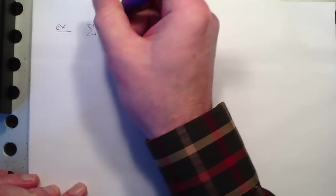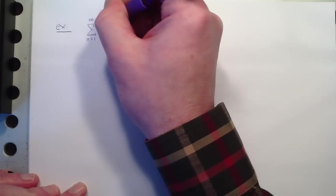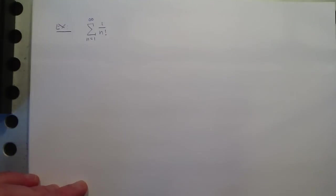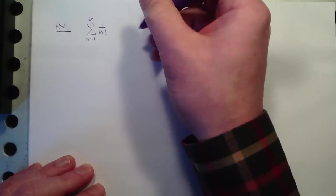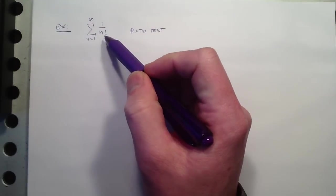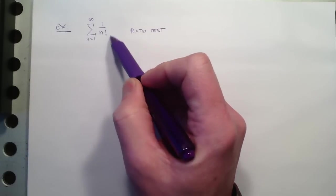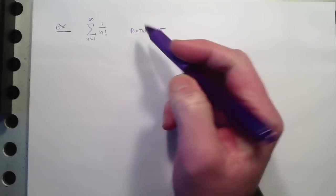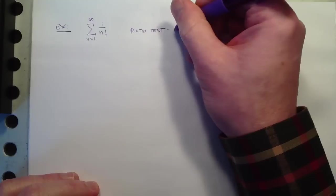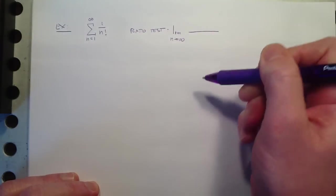Because if the limit of a term divided by the term before it, if that ratio is actually approaching a number, like a multiplier, and that number is less than 1, that means it's starting to behave more and more like a geometric series. And that means it will converge. Okay? So what does that look like? Let's do some examples. Let's try this. Does this converge? So we will use the ratio test.